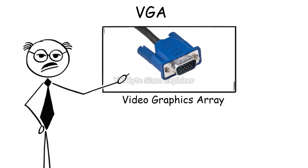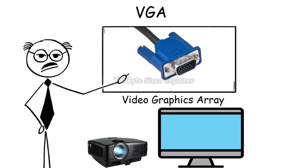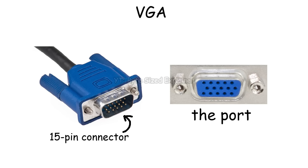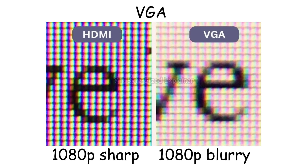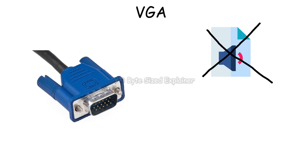VGA, or Video Graphics Array, is one of the oldest video connectors for connecting computers to monitors or projectors. It uses a blue 15-pin connector that carries analog signals, which makes it able to handle up to 1080p at best. But since it's an analog signal, the picture often looks blurry compared to modern ones like HDMI, which uses digital signals for a much sharper image. And VGA also does not carry audio signals.